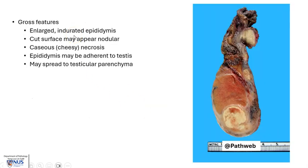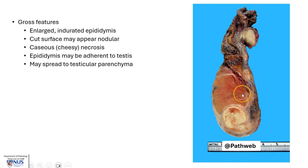On gross examination, as we saw, the epididymis is usually enlarged, and often the infection starts in the tail of the epididymis and then moves proximally. The cut surface may appear nodular. Here we can see an example of a more fresh case where this is the testicular parenchyma, and here is the involved epididymis with this very obvious nodular yellowish cheesy area. This is caseous necrosis.